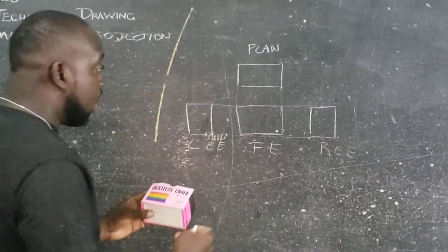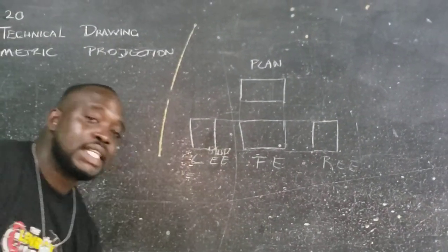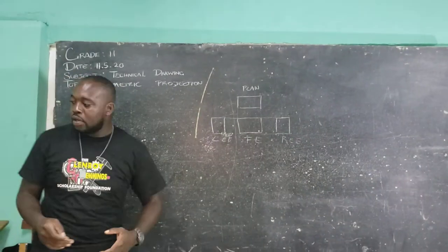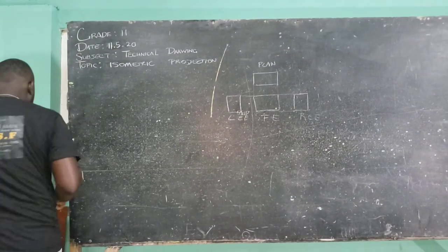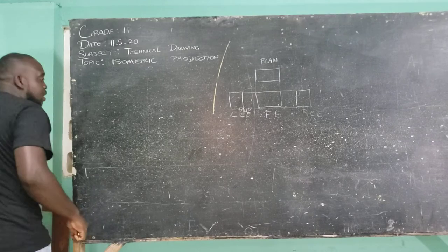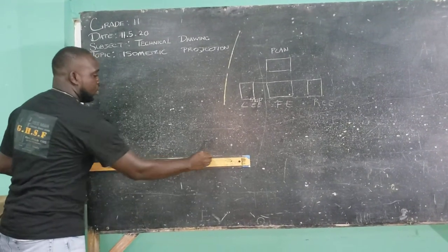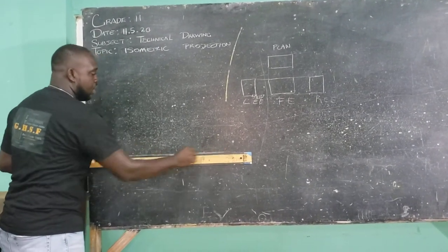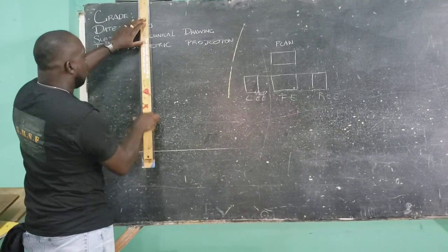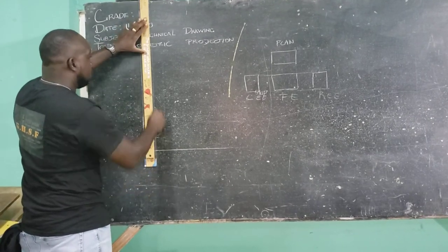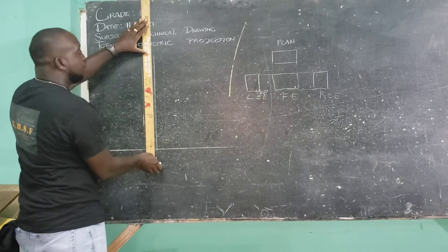Now with these views, we can go ahead and put this in isometric for it to make more sense — for us to get a full object. So for isometric, we need boundaries. With isometric, you cannot view the object outside of these boundaries, so we are going to have to establish the boundaries first.